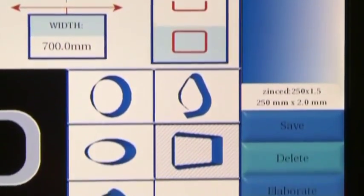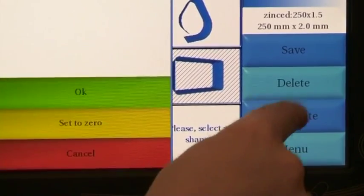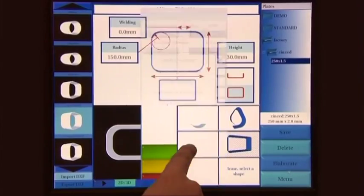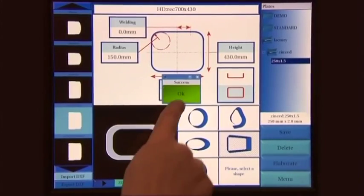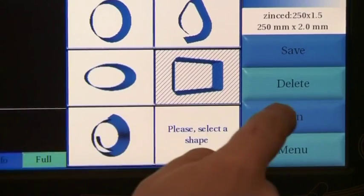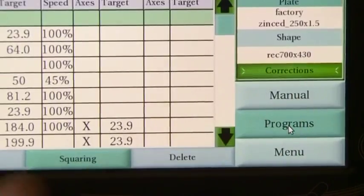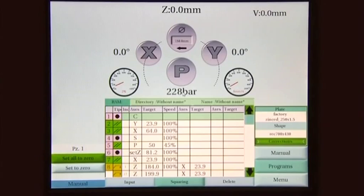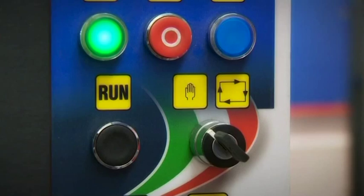Pressing the elaborate button, the automatic generation of the program is started. It's actually performed after the confirmation or change of some basic options. Pressing the execute button, the new program is transferred to the execution window from which we can run it.